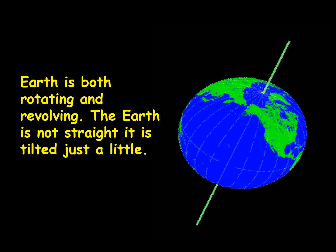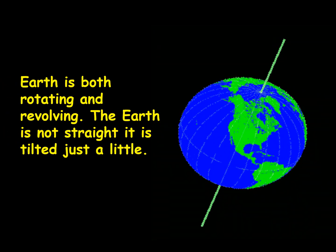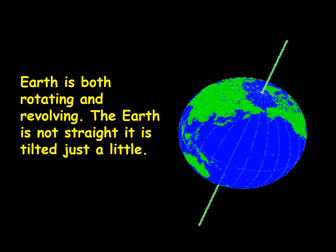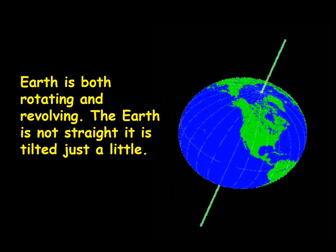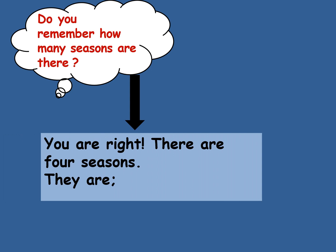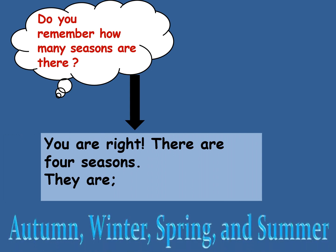Earth is both rotating and revolving. The earth is not straight — as you know, it is tilted just a little. Do you remember, children, how many seasons are there? Can you tell me? We have four seasons: they are autumn, winter, spring, and summer.